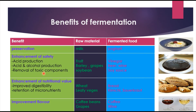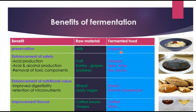Some products ensure safety by removing toxic components through fermentation. For example, soya bean protein may have some toxic or allergic components for some people, but if converted into soya sauce, those toxic components are removed. Fermentation also improves digestibility — wheat may not be completely digestible for some people, but when converted into bread it becomes a very good food. Retention of micronutrients occurs in fermented leafy vegetables like kimchi and sauerkraut, and improvement in flavor is seen in coffee beans, while grapes give wine.